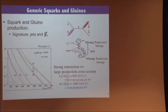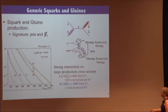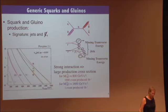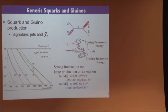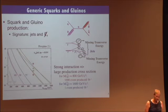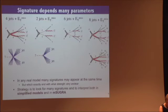Just to illustrate how fast the cross-section falls: for a gluino mass of 800 GeV at the 8 TeV collider we produce of the order of a thousand events per inverse femtobarn, while for a gluino mass a factor of 2 higher we only produce one event. Tomorrow's lecture will cover the LHC future — once we have the higher center of mass energy we can access these higher masses.